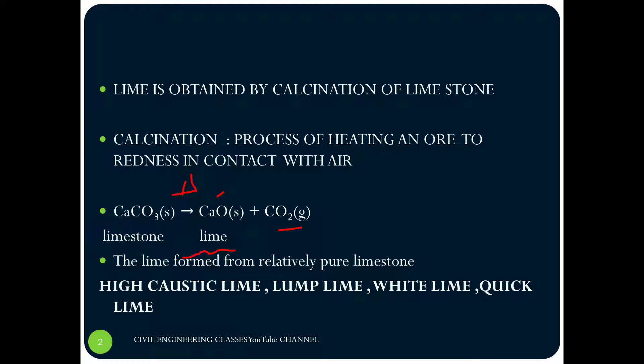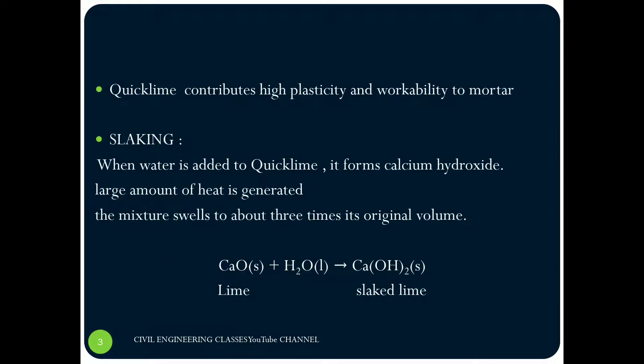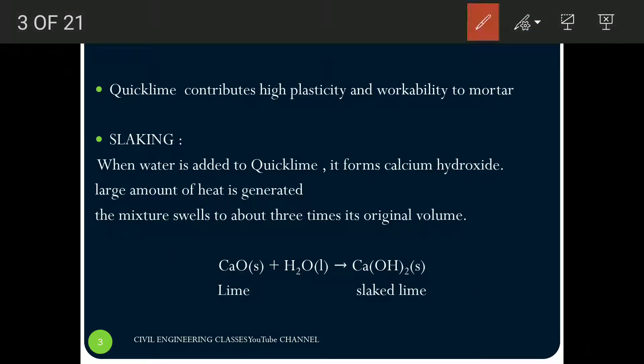Pure limestone means the lime content is more. Obviously, the limestone will have lime and some other unwanted material. If you are producing lime from pure limestone, it is called high caustic lime, lump lime, white lime, or quicklime. It has very high plasticity and workability when used in mortar.